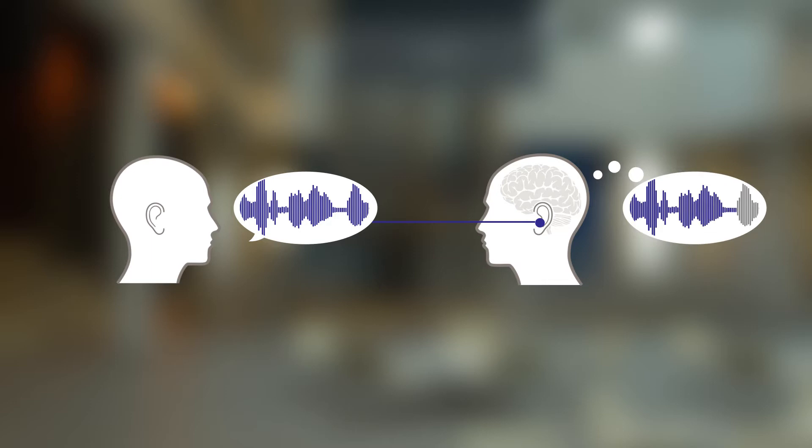We all use our brains and our working memory when decoding speech. When someone talks to us, we compare what we hear with information already stored in our long-term memory. The brain is able to match the words we hear with words we already know and get meaning out of them.